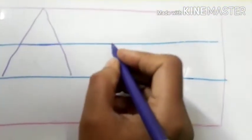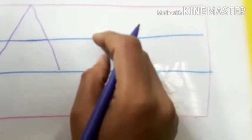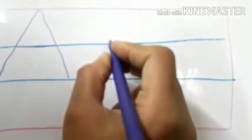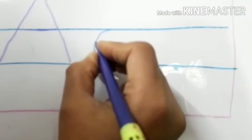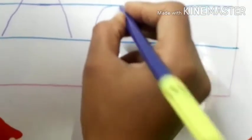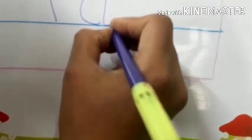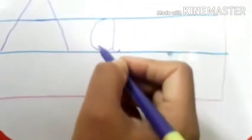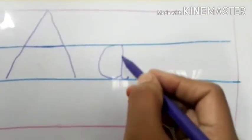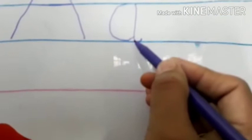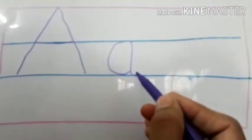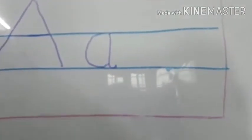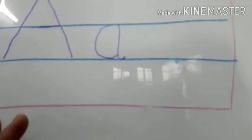Now I will show small a. There is a blue line at the top and bottom. We need to touch the top blue line and make a right-left curve. Then touch the left curve at the down. Then a standing line and down curve. Left curve from top blue line to down blue line, standing line top blue line to down blue line, and down curve on the down blue line. This is small a. What is small a sound? Ah. You need to practice in your books like this.